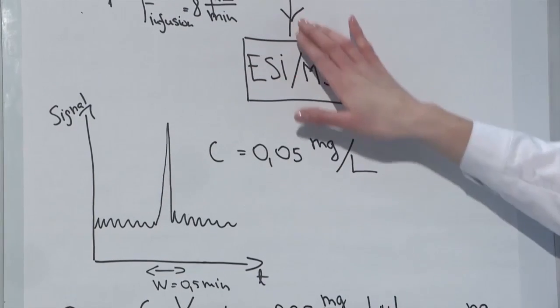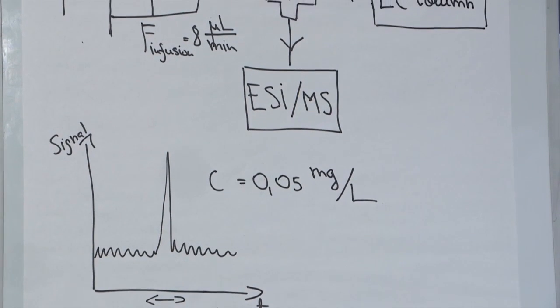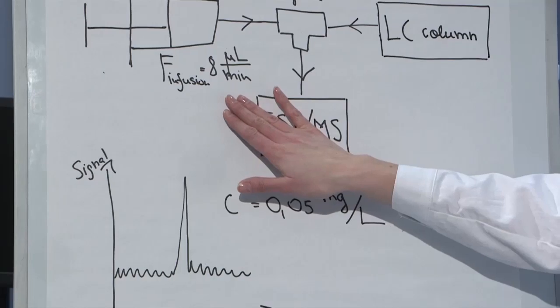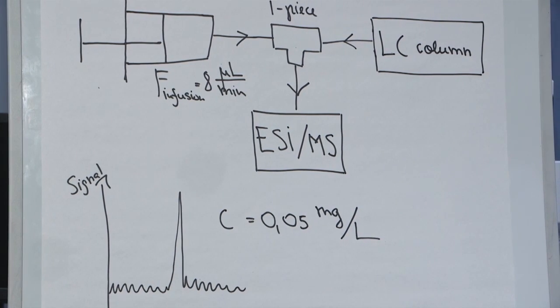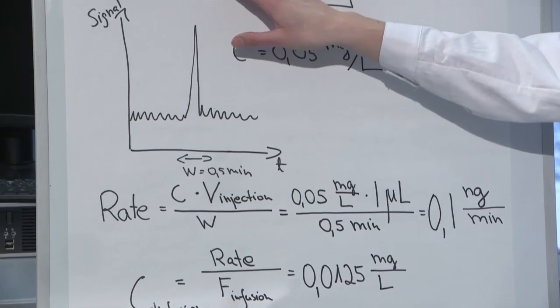We want to keep the infused concentration in this post-column infusion experiment quite similar to this rate. If we know the flow rate of our infusion pump, which guarantees a stable flow, we can calculate the concentration for the infusion sample. For our infusion pump that is stable at 8 microliters per minute, we know that this concentration should be 0.01 milligrams per liter, and I have this solution prepared here.